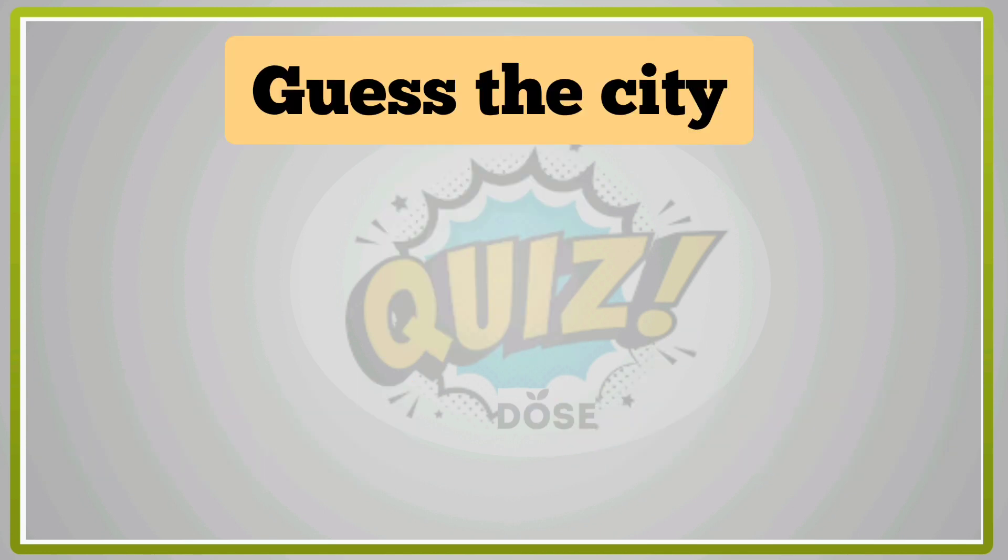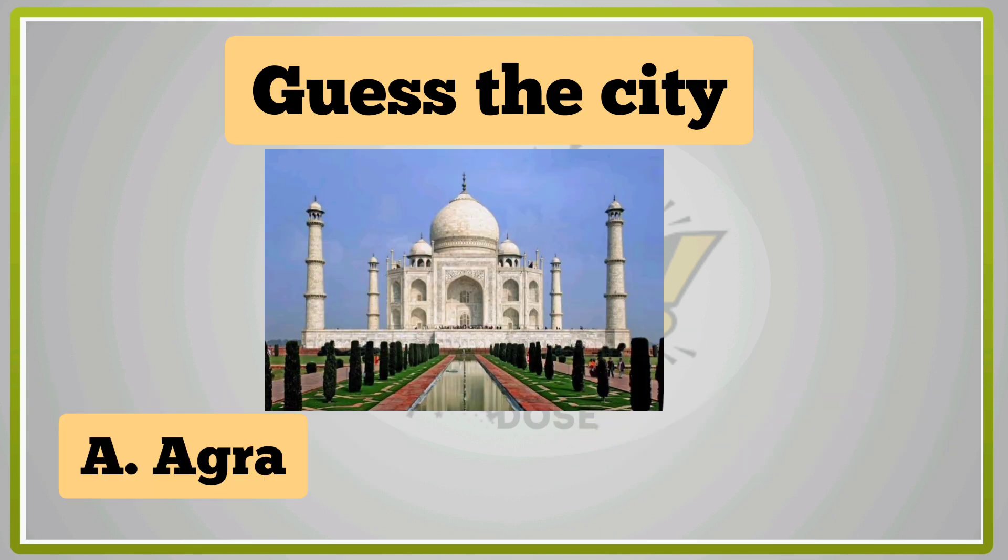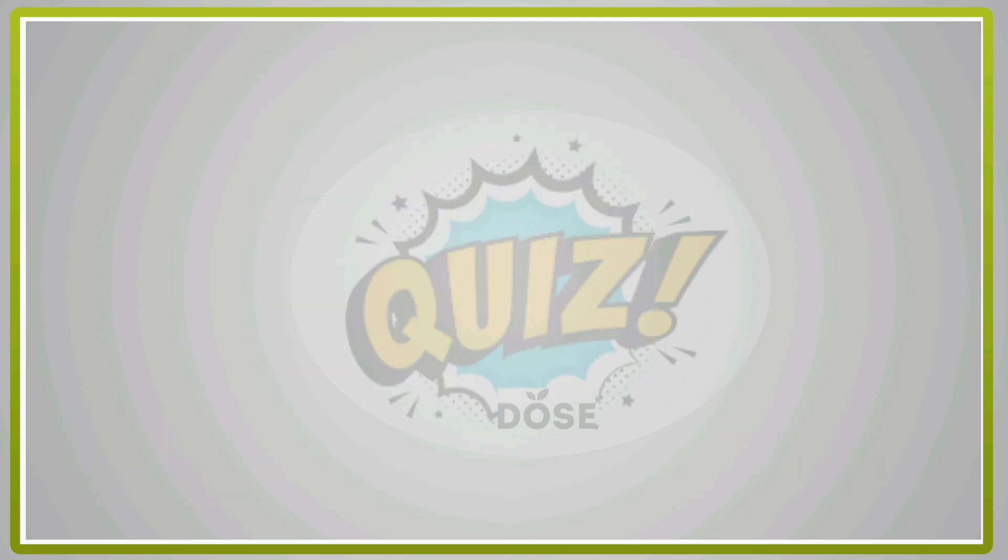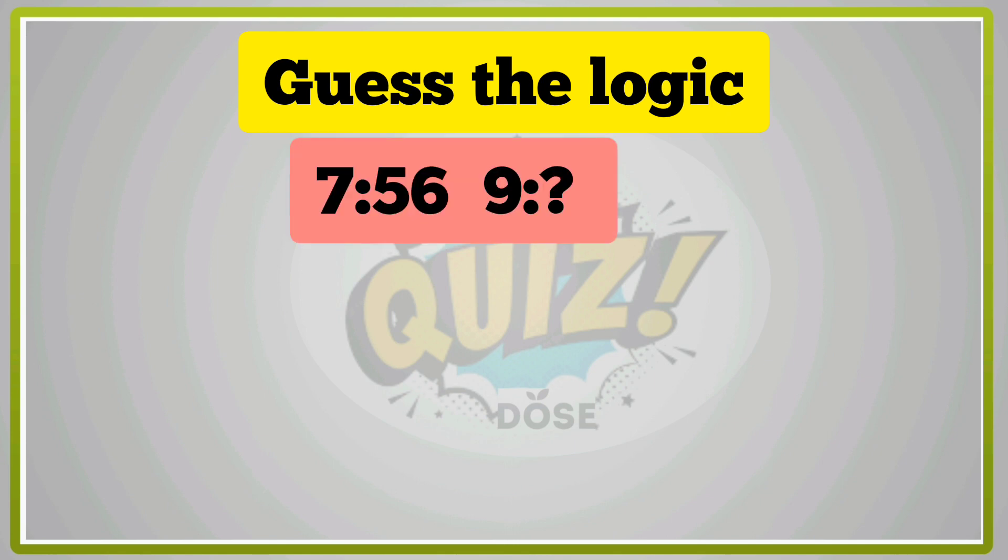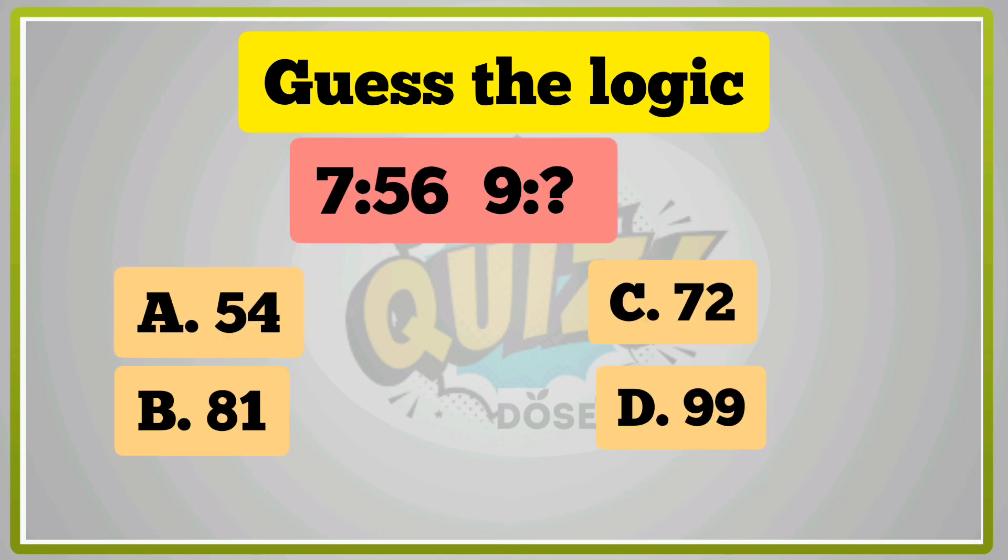Guess the city. A, Agra. B, Delhi. Agra is right answer. A, 756 9. What? A, 54. B, 81. C, 72. D, 99. C, 72 is right answer.